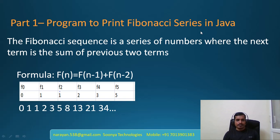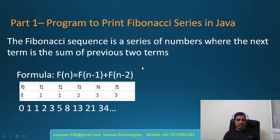What is Fibonacci series? Fibonacci sequence is a series of numbers where the next term is the sum of the previous two terms. The formula to calculate Fibonacci series is f(n) = f(n-1) + f(n-2). The first two terms in Fibonacci series are 0 and 1.